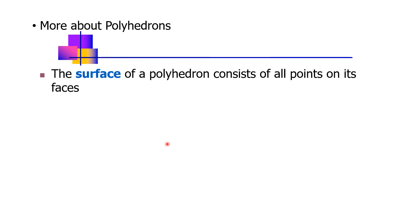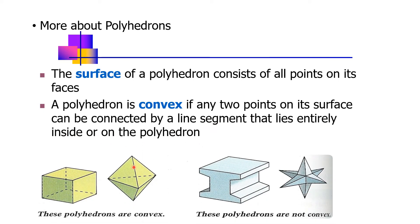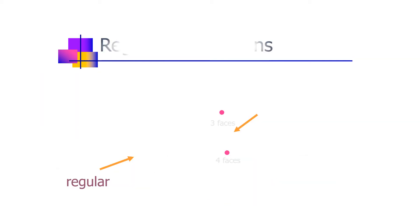Let's have more about polyhedrons. The surface of a polyhedron consists of all points on its face or its faces. A polyhedron is convex if any two points on its surface can be connected by a line segment that lies entirely inside or on the polyhedron. So these polyhedrons are convex, and these are not convex.